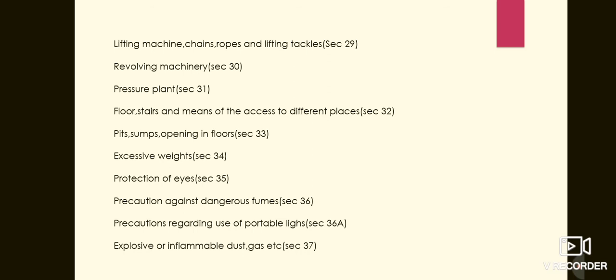Next is explosive or inflammable dust, gas etc., mentioned in session 37. Even if a manufacturing process is producing dust, gas, fumes or steam which can explode on ignition, the plant should be effectively enclosed. Such dust, gas and fumes should not be allowed to accumulate.